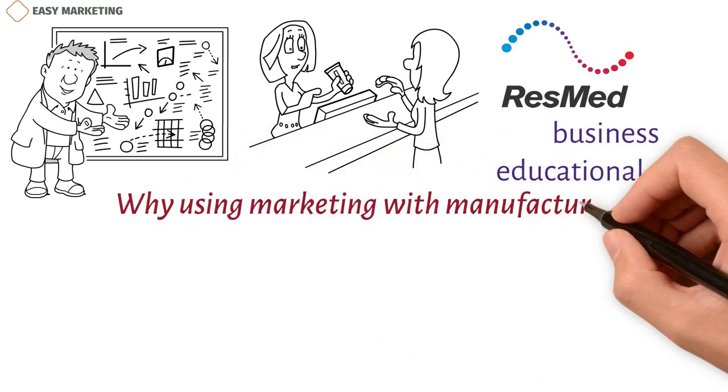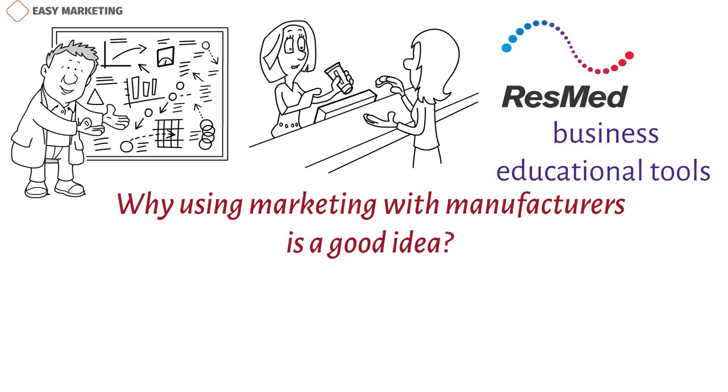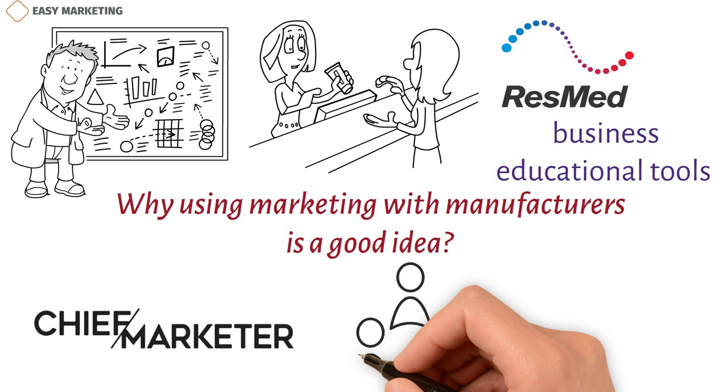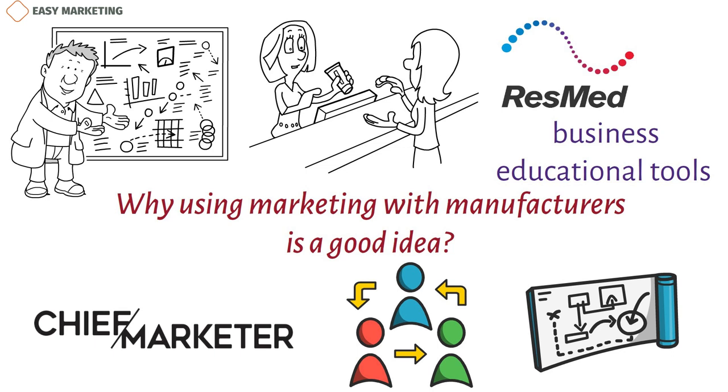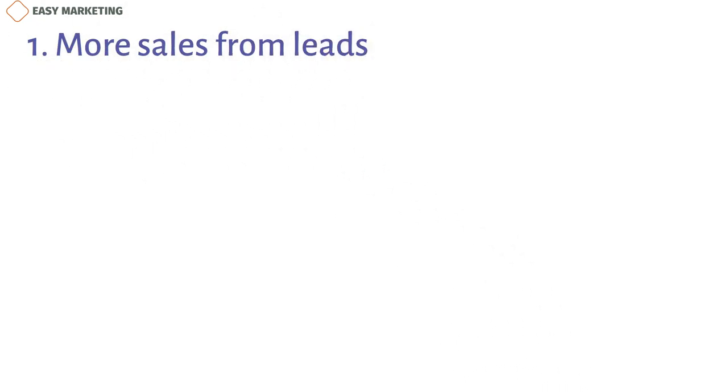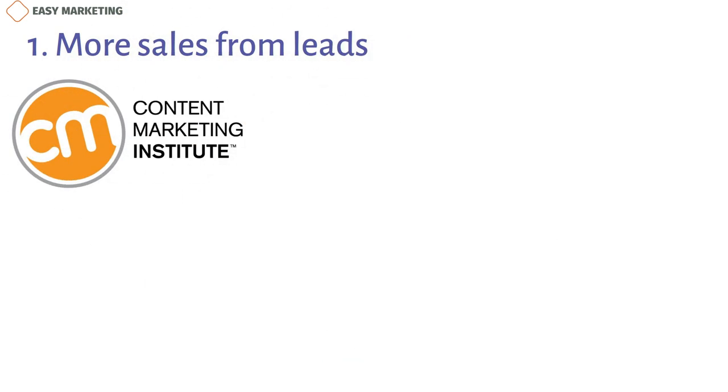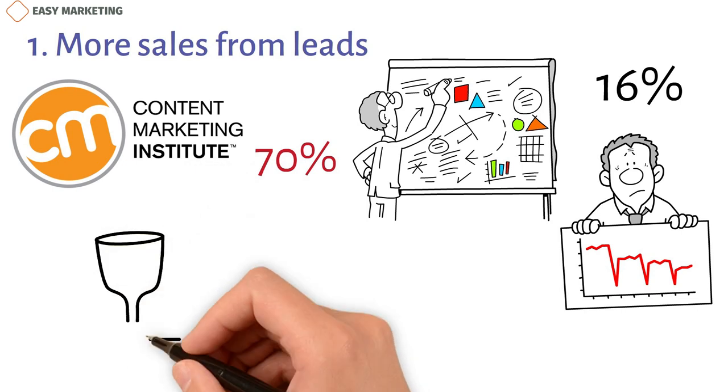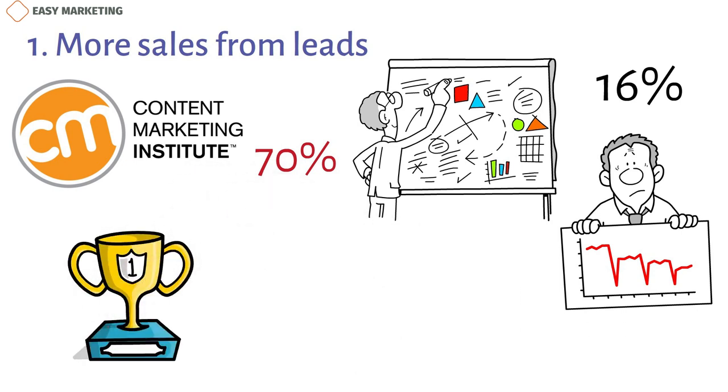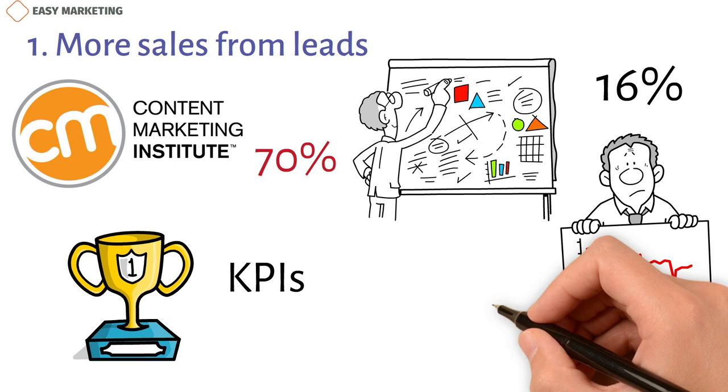Why using marketing with manufacturers is a good idea: According to data given by Chief Marketer, it's hard for B2B marketers to get prospects to interact with them or find good leads. That's where a good plan for marketing comes in. More sales from leads: The 2020 B2B Content Marketing Benchmark Report says that nearly 70% of the most successful B2B marketers have a written content marketing plan. Only 16% of the least popular businesses can say the same, which shows how little effort they put into marketing.